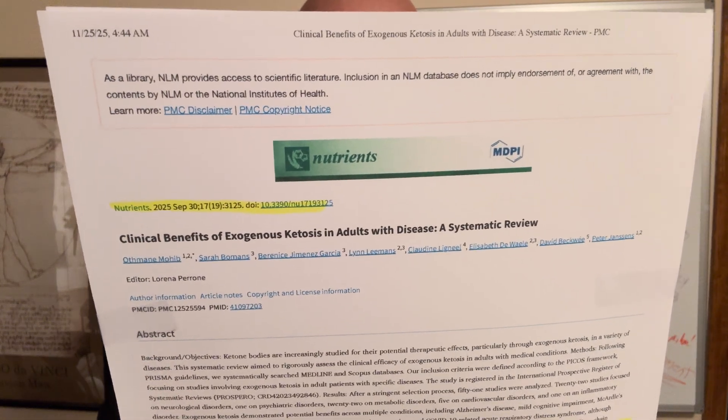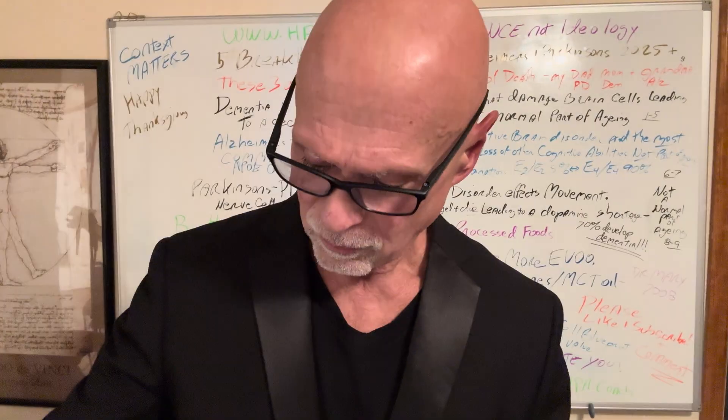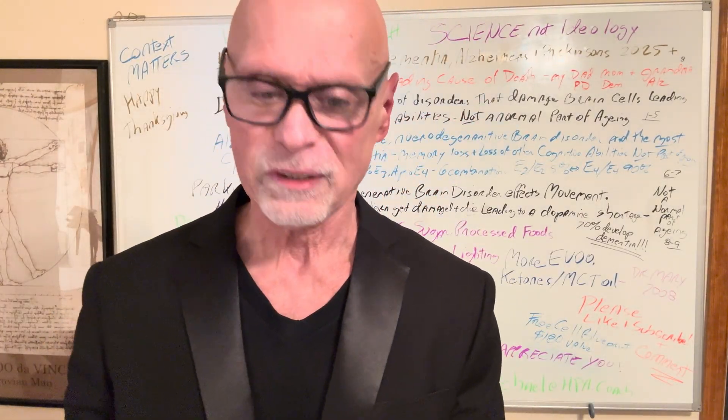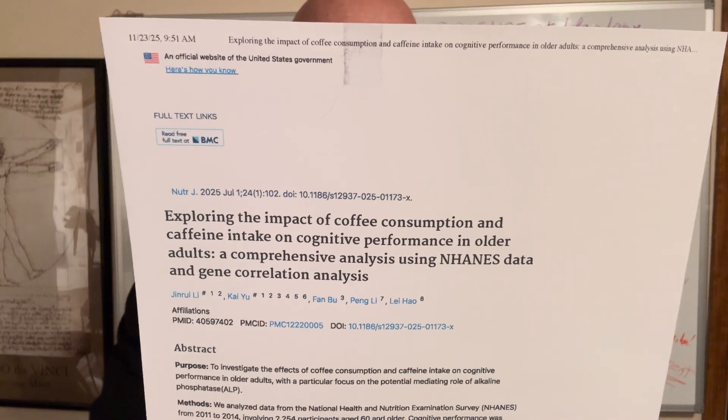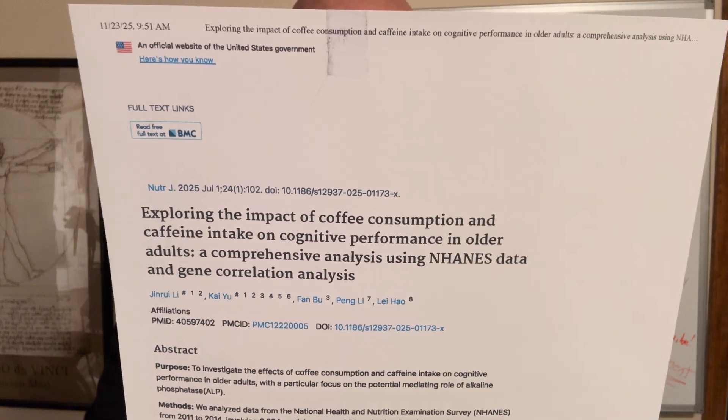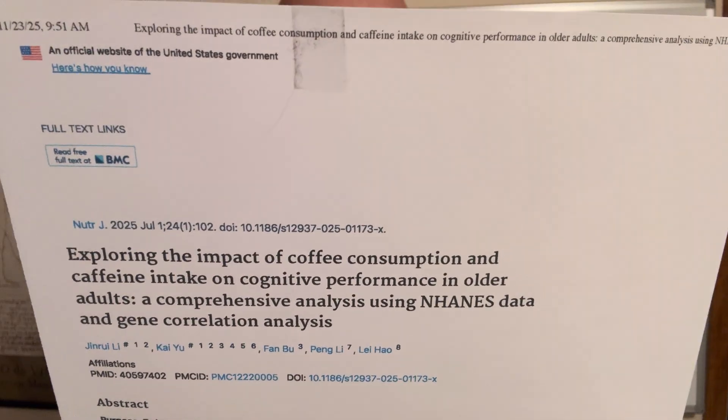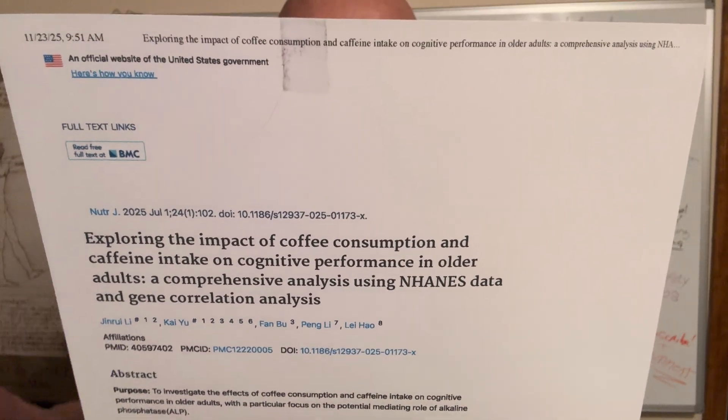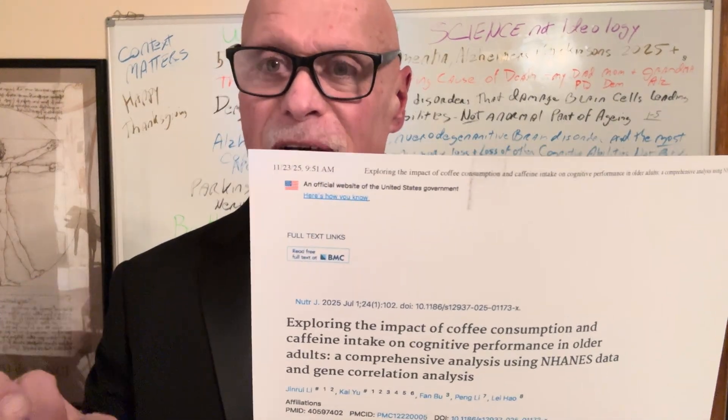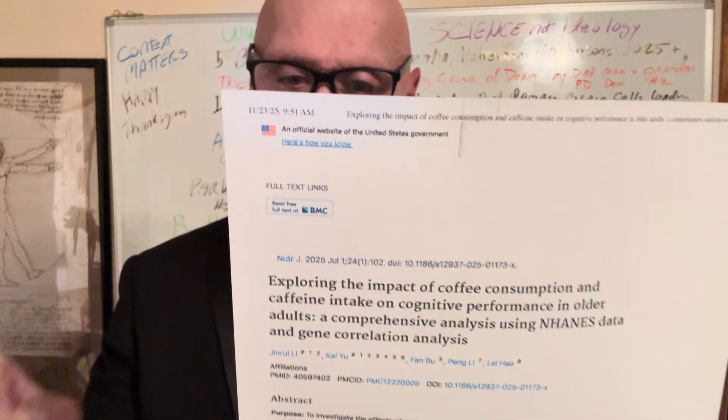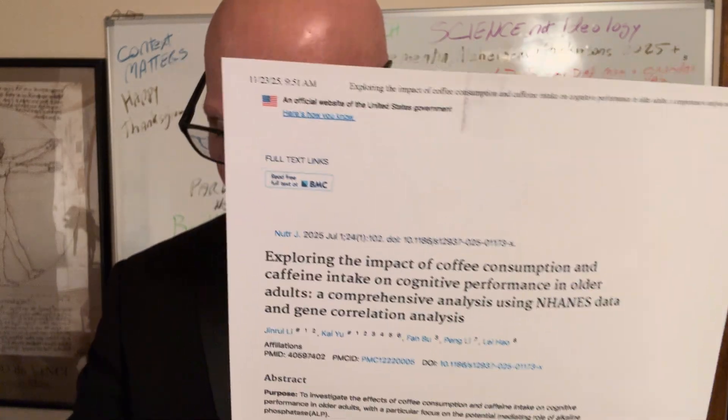Okay. Clinical benefits of exogenous ketosis in adults with disease, a systemic review. Now a couple interesting ones. Exploring the impact of coffee consumption. They figured out coffee consumption regulated inflammation and gut health, it even helped bone formation. So to be clear, it helped remove inflammation, it improved gut health, and improved bone formation. Now, we're talking about one cup a day.